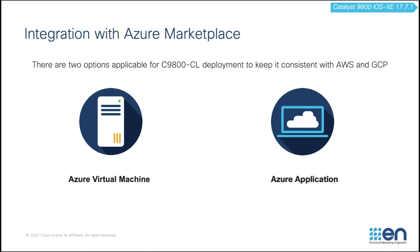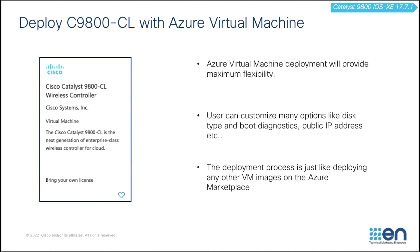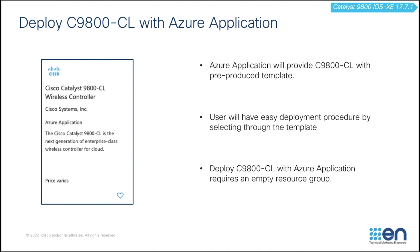Now let's talk about what is actually available on the Azure marketplace. There are two options available for 1900 CL deployment. One is Azure Virtual Machine and the other one is Azure Applications. If you are deploying with Azure Virtual Machine, you will be provided with maximum flexibility and customization, just like deploying any other VM images through the Azure marketplace. If you are deploying with Azure Application, you will be provided with pre-produced templates that make deployment easy by selecting through the template.